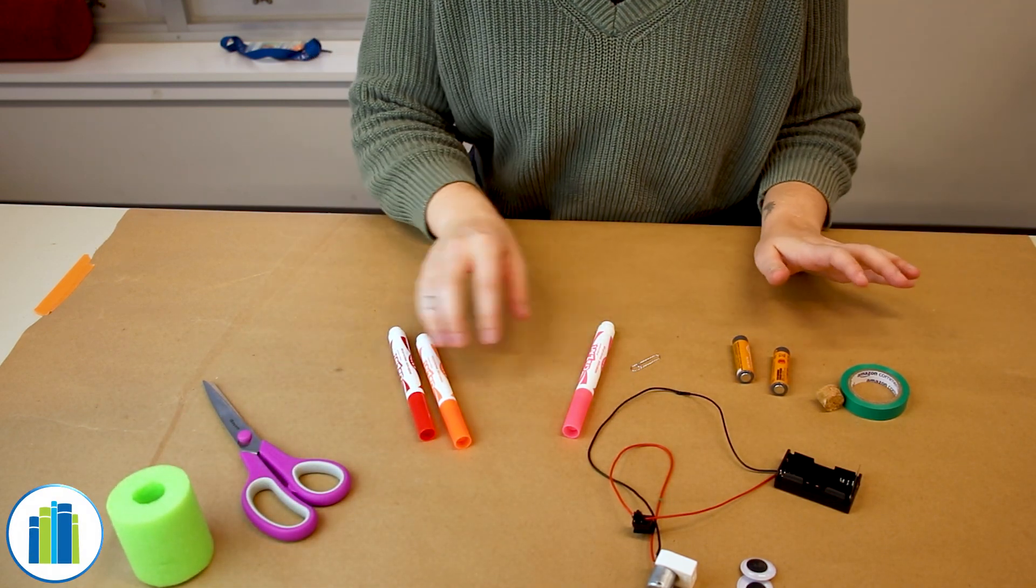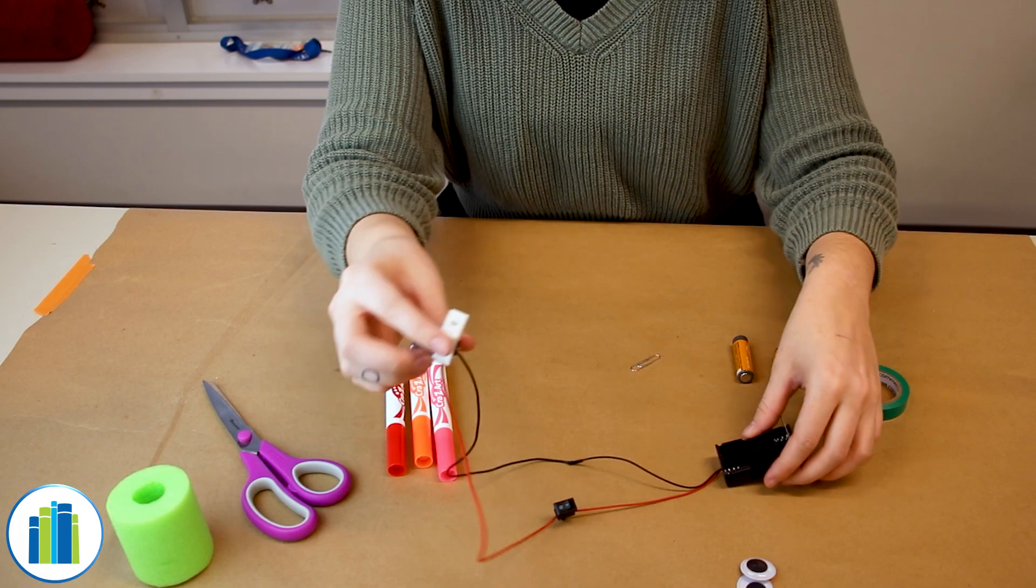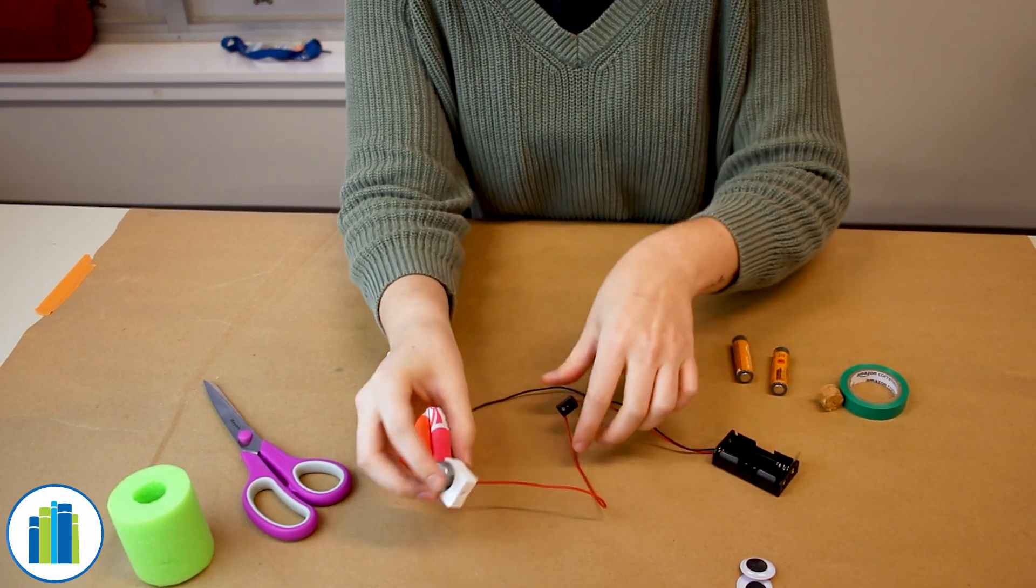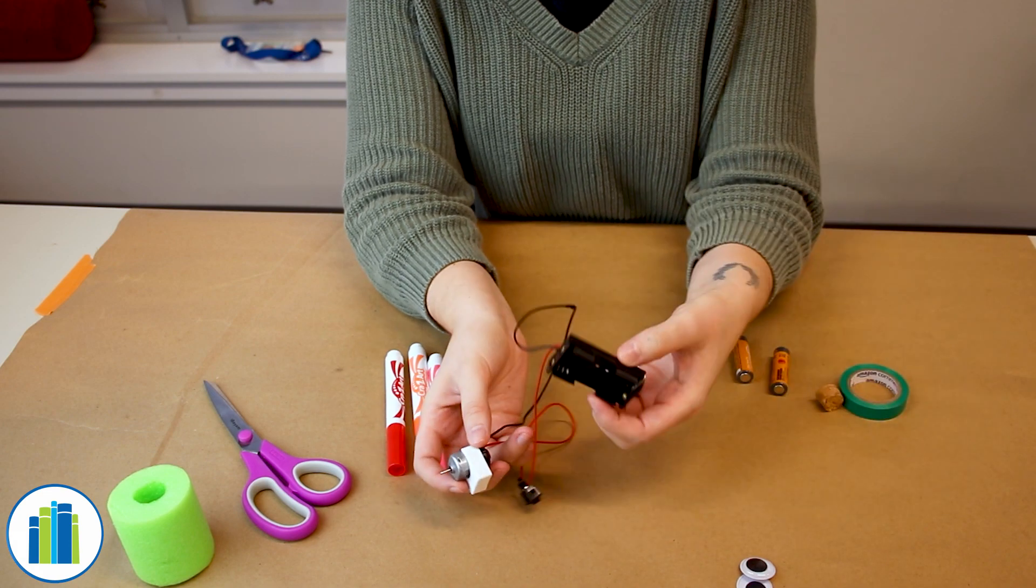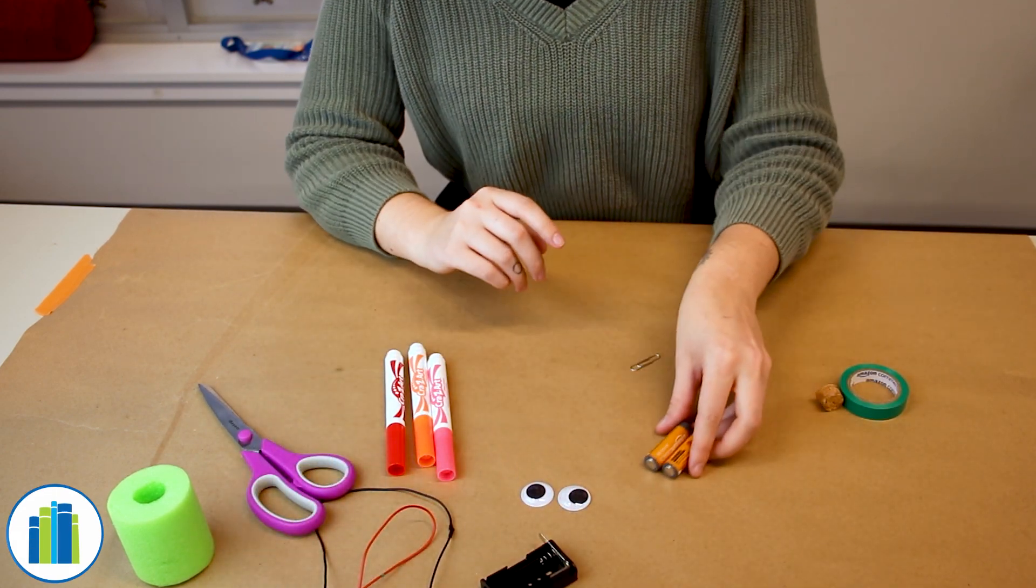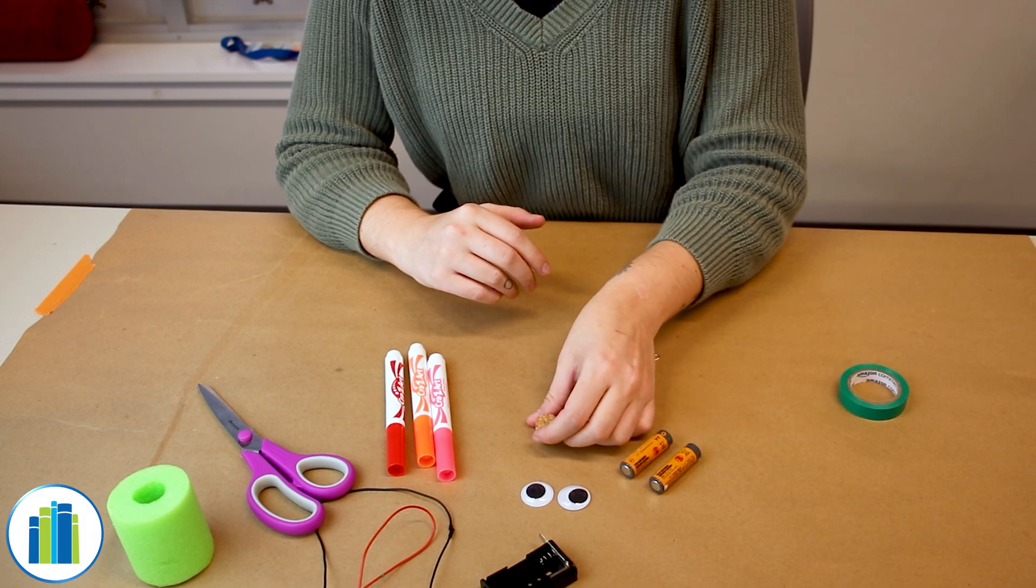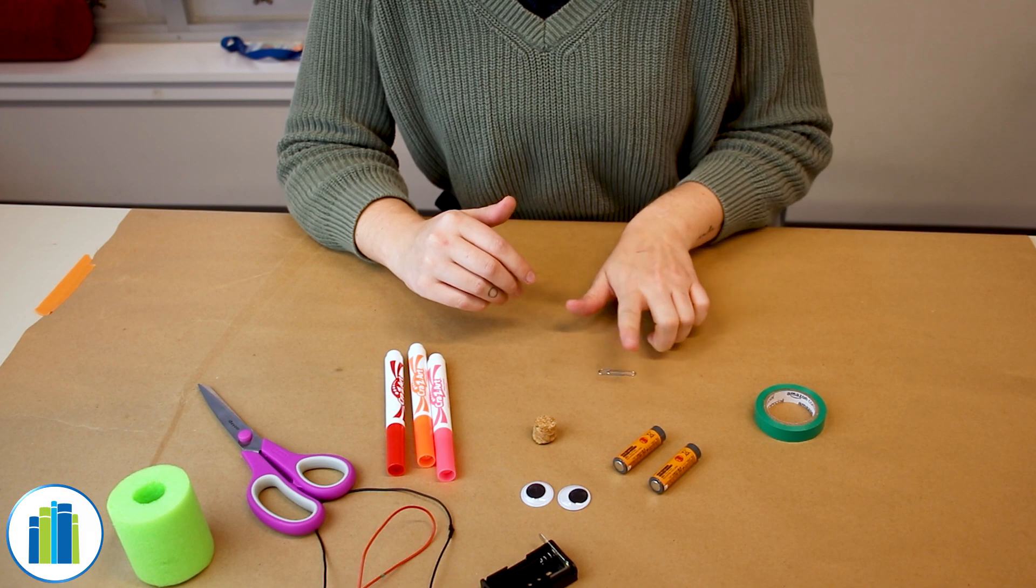Okay, so your kit should include three markers, a motor that has some wires and then a little on-off switch and a battery holder, some googly eyes, two batteries, a cork, electrical tape, and a paper clip.